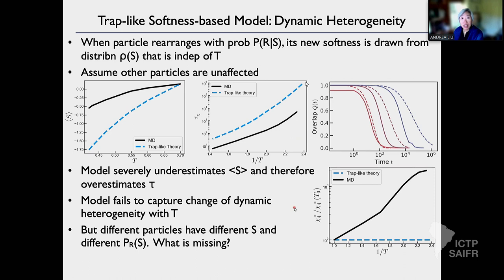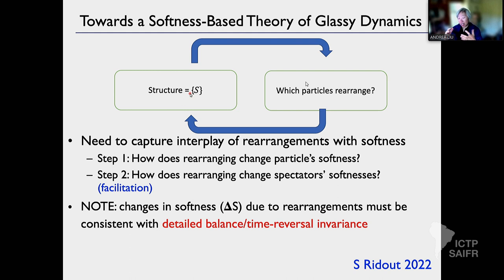That points to what we need: we need to include correlations. Here's the idea of our theory. If you have some structure quantified by softness, we know that tells us which particles will rearrange — from softness we get the probability of rearranging, the energy and entropy barriers. But then if there's a rearrangement, that's going to change the softness, because softness is a measure of local structure. So a rearrangement will scramble the local structure — and it not only affects the rearranging particle, but can affect other particles nearby.